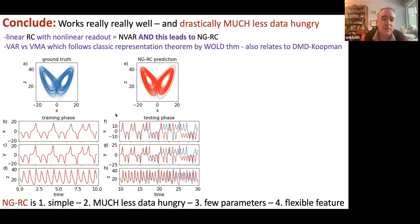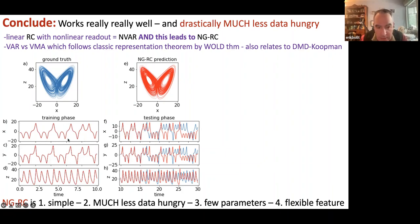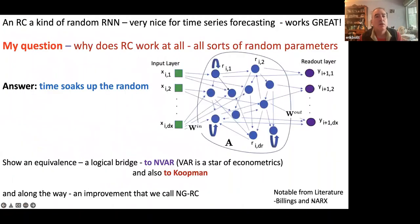In summary: NGRC is simple, much less data-hungry — look at this small dataset I'm training on, and yet I've already reproduced the attractor, not training on hundreds of thousands of points. It has very few parameters to train and is very flexible in feature selection. So: what is an RC?